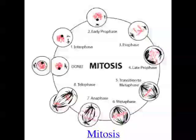Prophase is the first stage of mitosis. The chromosomes in the nucleus condense so they become visible, and the nuclear membrane around the chromosomes breaks apart and breaks down. Two organelles called centrioles begin to migrate to opposite poles of the cell, and spindle fibers — protein fibers a bit like bits of string — begin to form between the two centrioles.